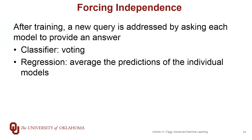Once training is done, a new query is handled just as with the voting classifier. Each ensemble member sees the query and provides a vote — either a class label or a probability distribution for classifiers, or a prediction in a continuous space for regression. In the classifier case, we go through either a hard or soft voting process. For the regression case, we combine the different predictions, the simplest approach being to average the predictions of each model in the ensemble.